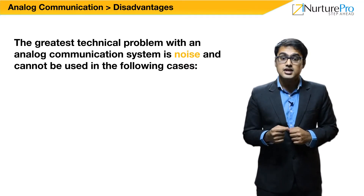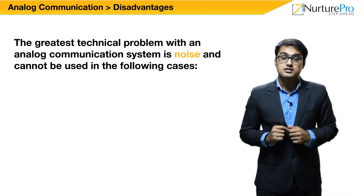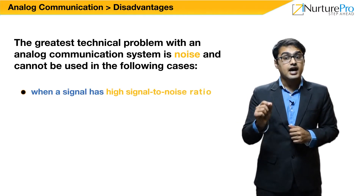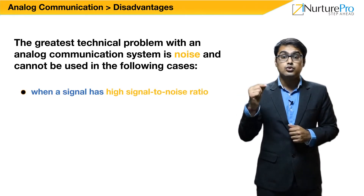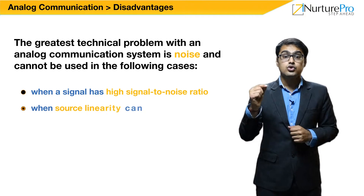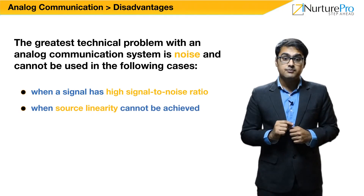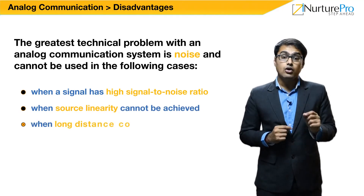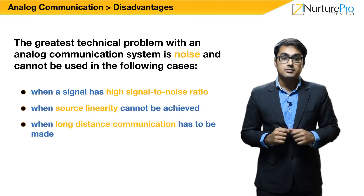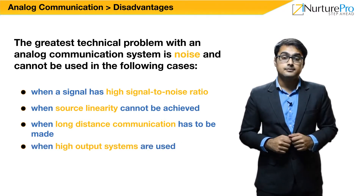In addition to this, analog communication cannot be used in the following cases: when a signal has a high signal-to-noise ratio, when source linearity cannot be achieved, when long-distance communication has to be made, and when high output systems are used.